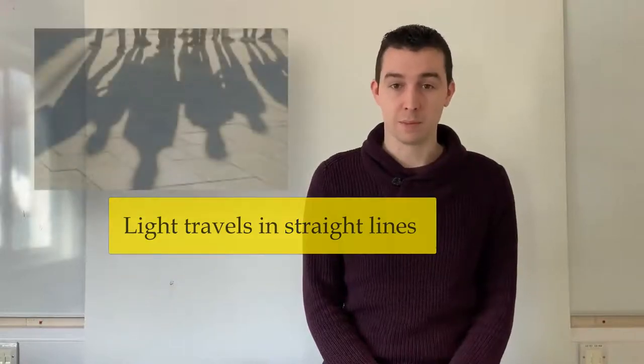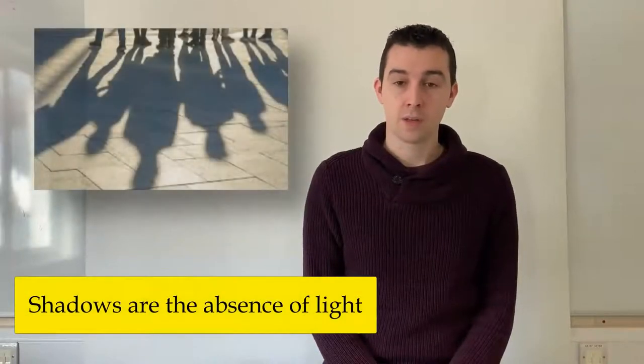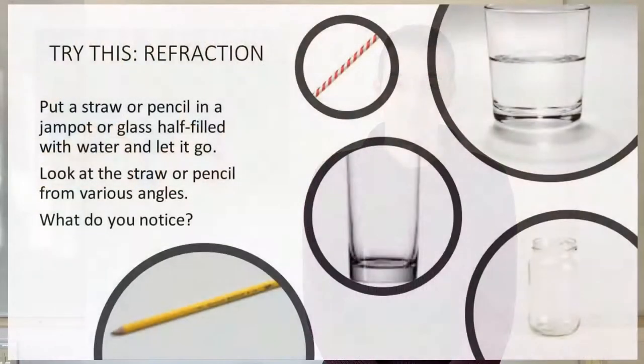Think of shadows as the absence of light. Light only travels in straight lines when it travels through the same substance. For example, through air, through glass or through water.